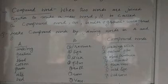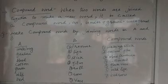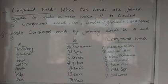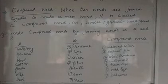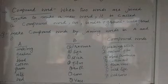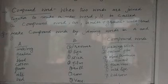जब दو लफ्जों को हम आपस में जोड़ के एक नया लफ्ज बनाते हैं, उसको हम compound word कहते हैं। जैसे under और ground को हमने जोड़ के एक नया लफ्ज पाया underground। तो underground हमारे लिए compound word हो गया।